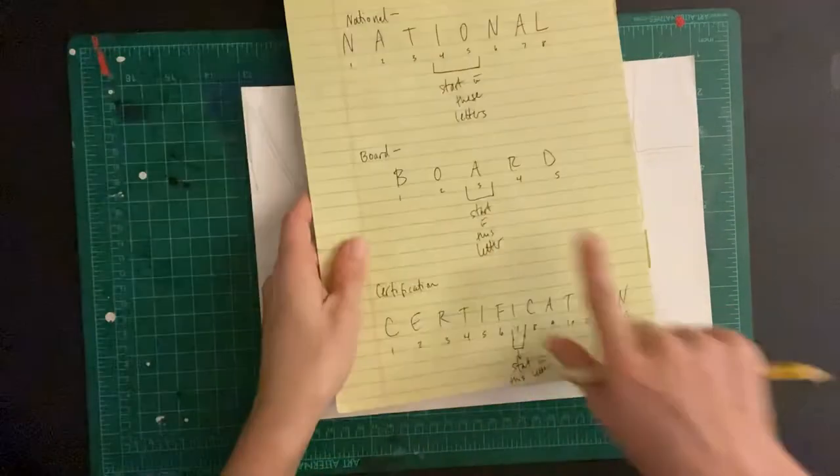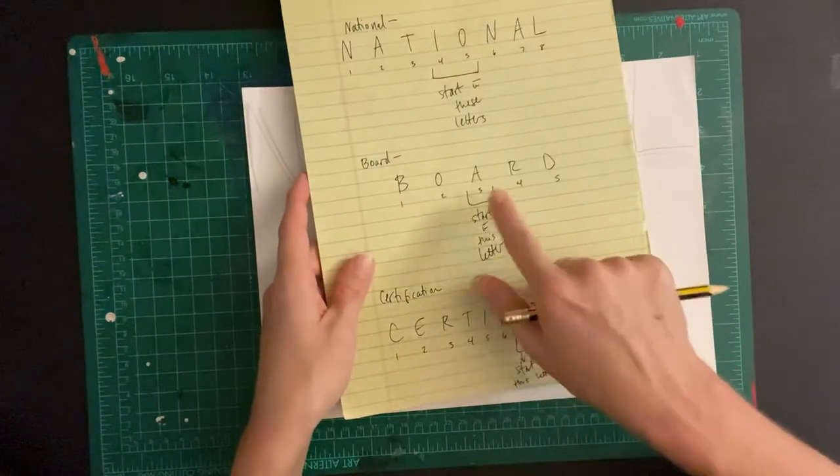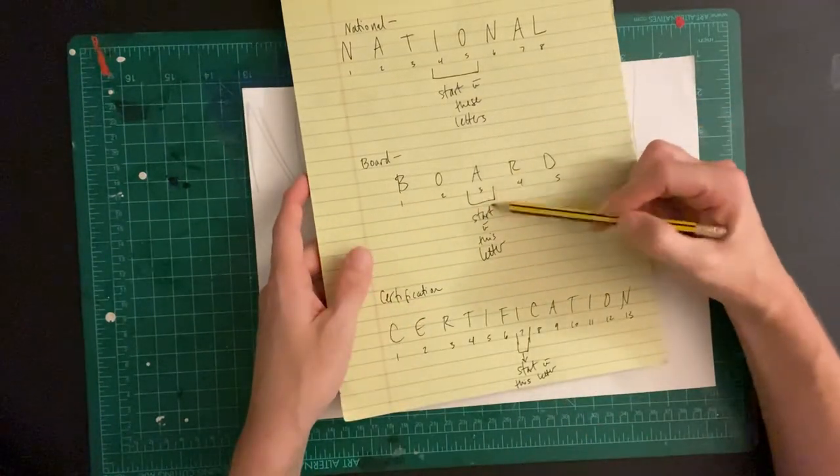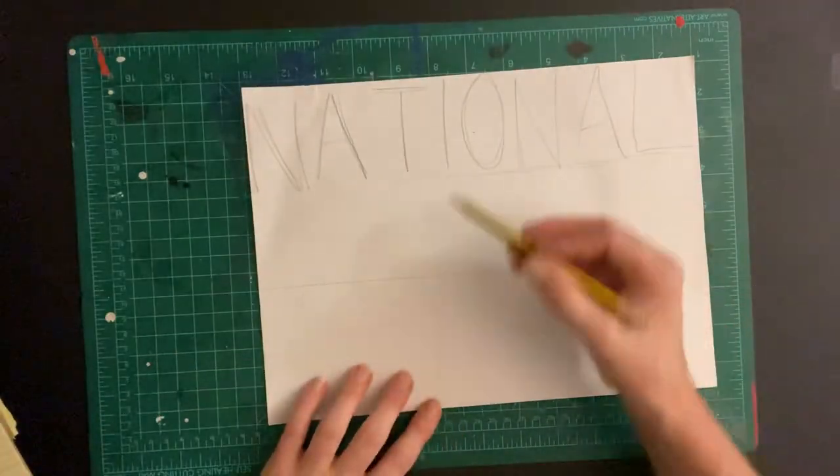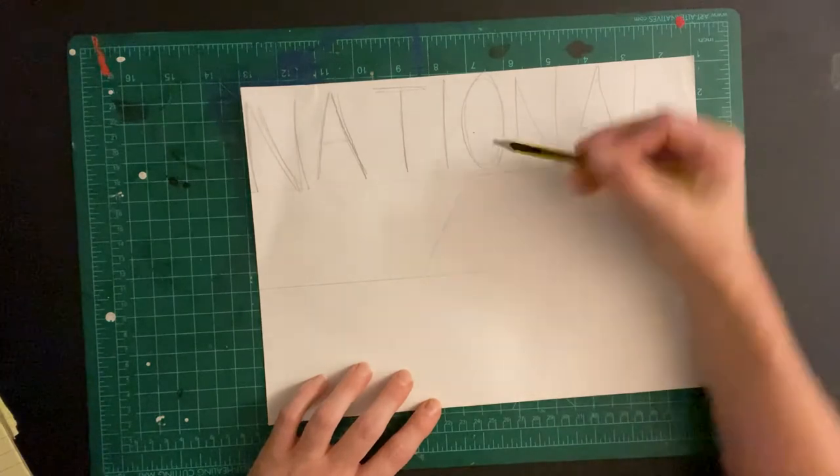I'm going to do this again with board. Board is a little easier. It has five letters. So I'm going to start with the letter A, which is the third one because it's the center. So if I have this,